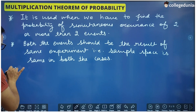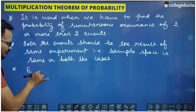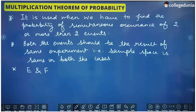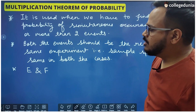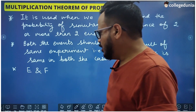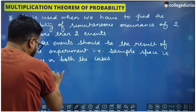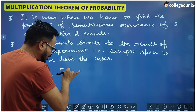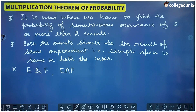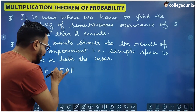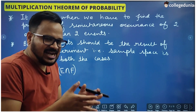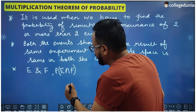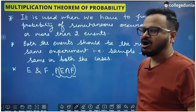For example, let's say there are two events E and F from the same experiment. E intersection F means E and F both. So if we write P(E∩F), that is the probability when E and F both occur together. This is what we are going to find using the Multiplication Theorem of Probability.